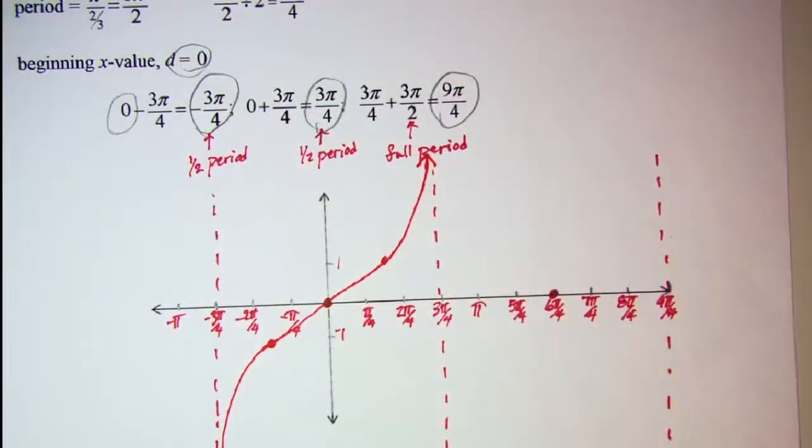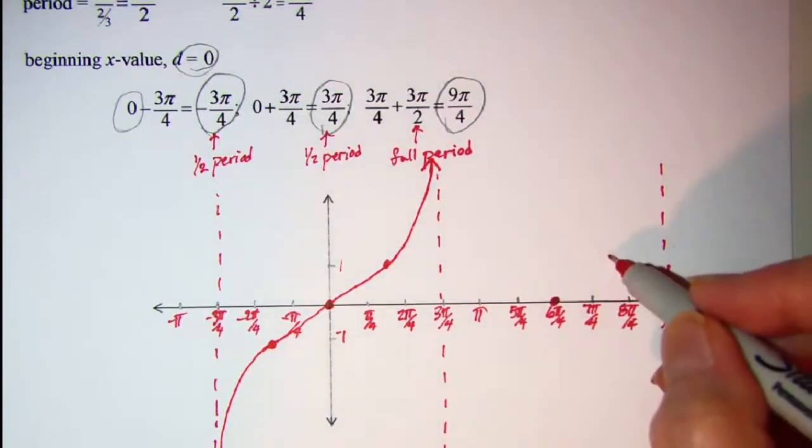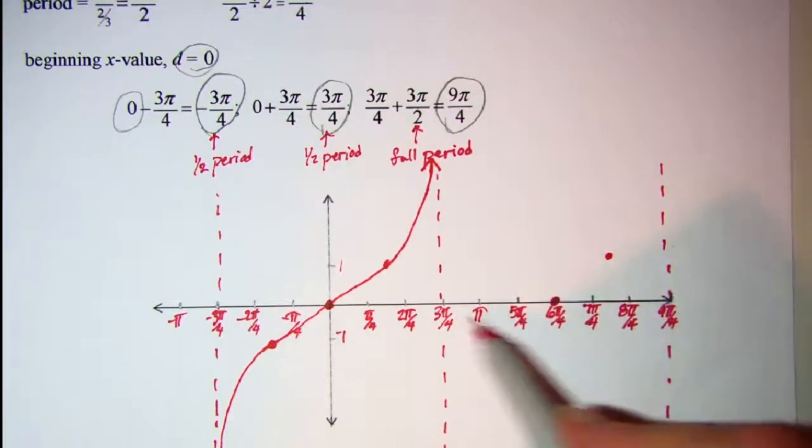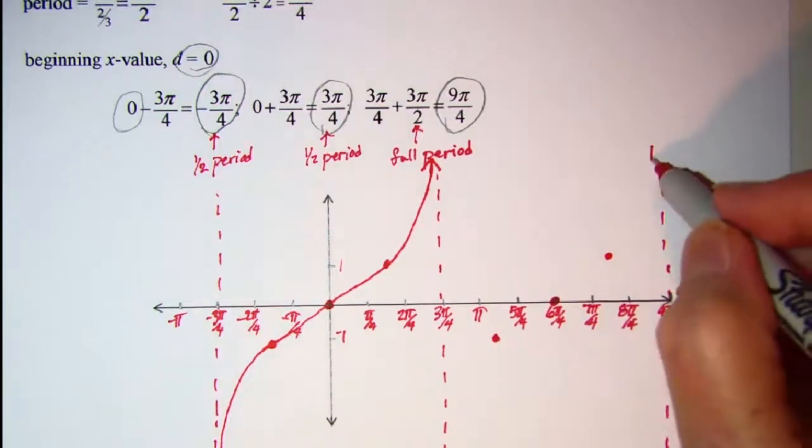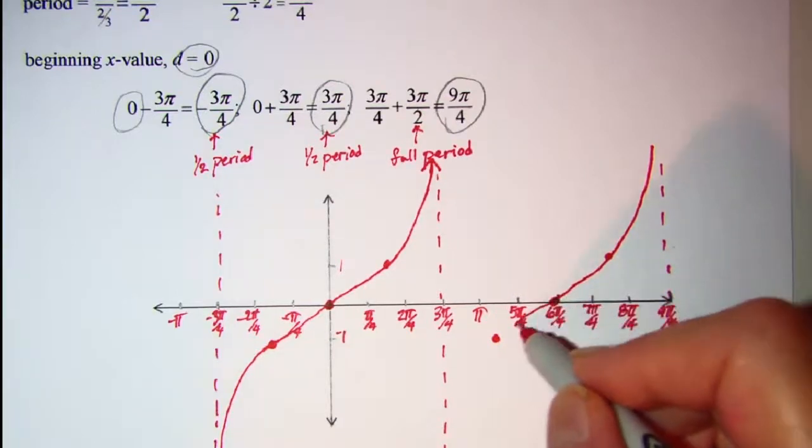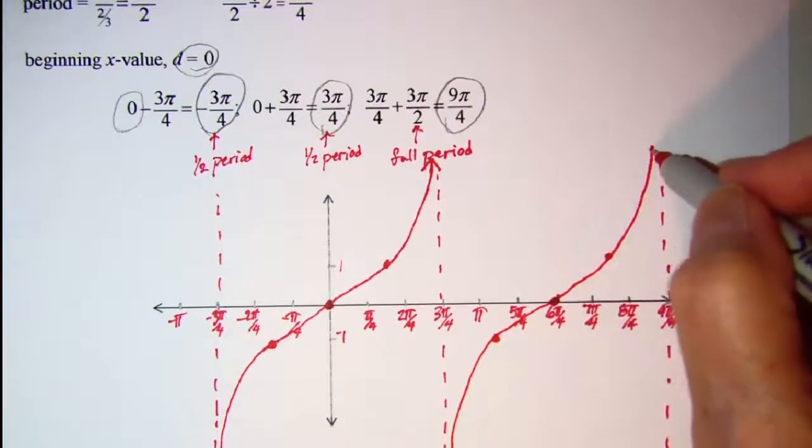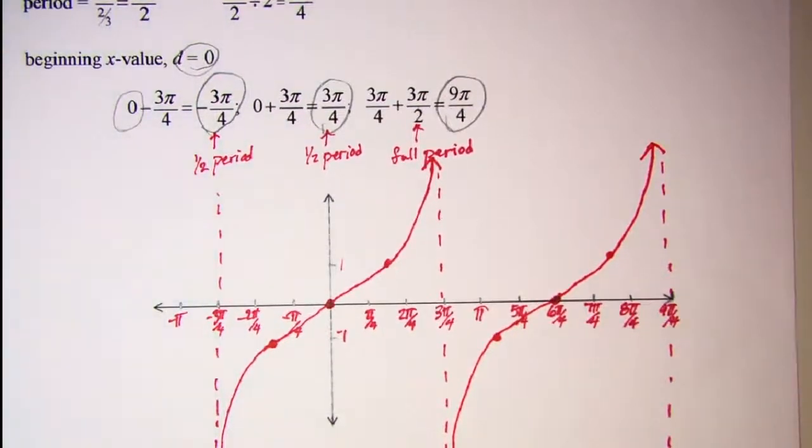My tangent curve is periodic so this repeats. Halfway between my zero and my asymptote I have a 1 value, and then from positive infinity, and then here also right here negative 1. And so from positive infinity through the 1 through the 0 through the negative 1 and then down to negative infinity.